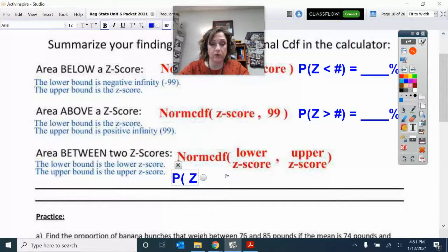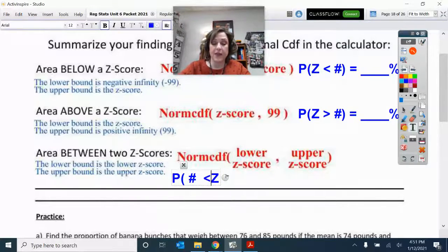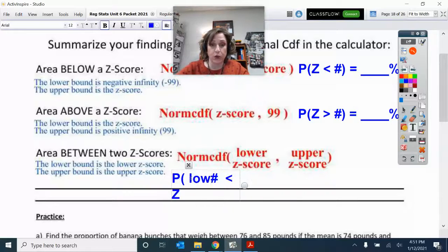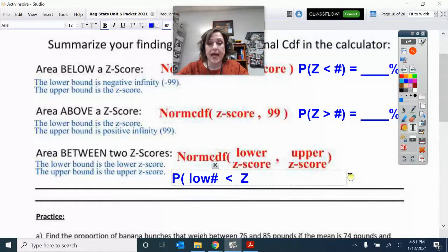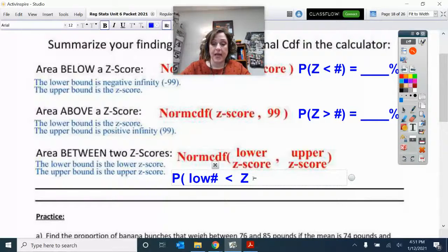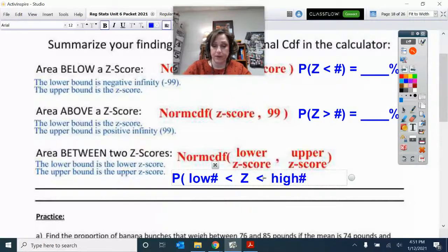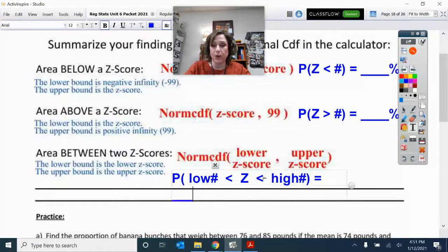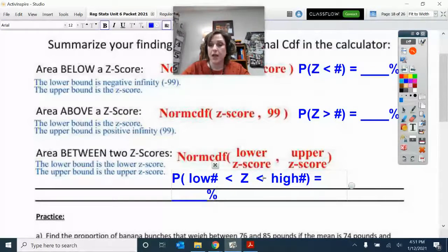Let me write this in here. This is the low Z score, and that low Z score is less than the Z. And that Z score is less than the high number, whatever that is. Then that will equal whatever our percent is.